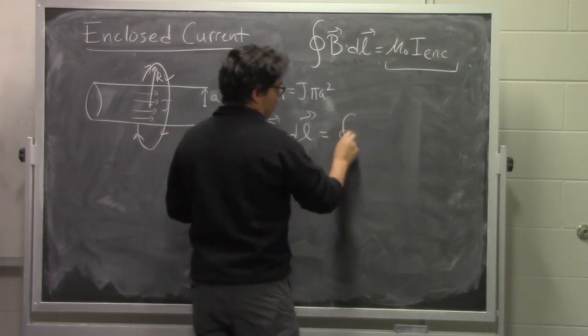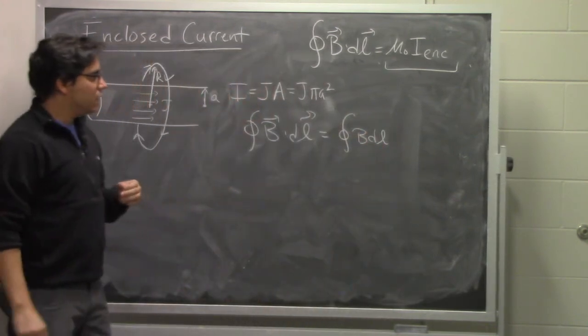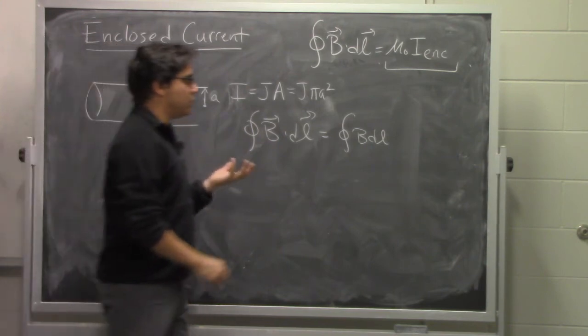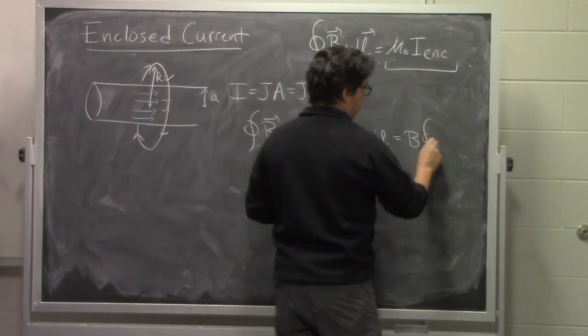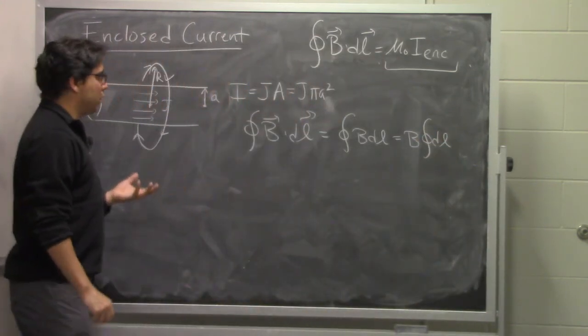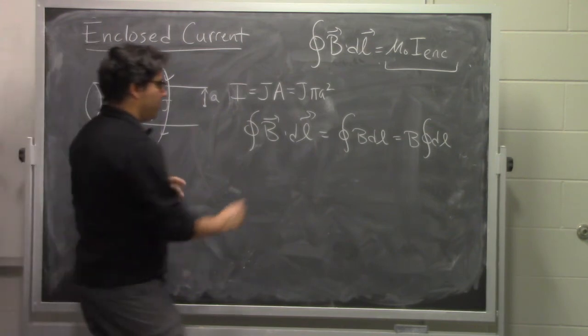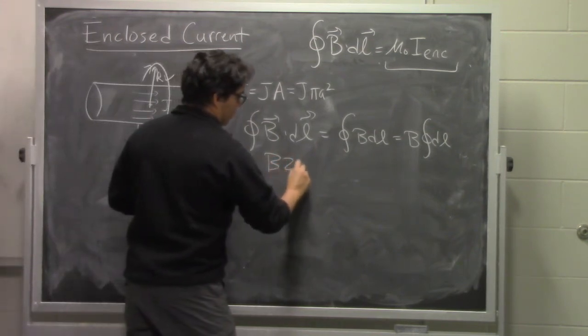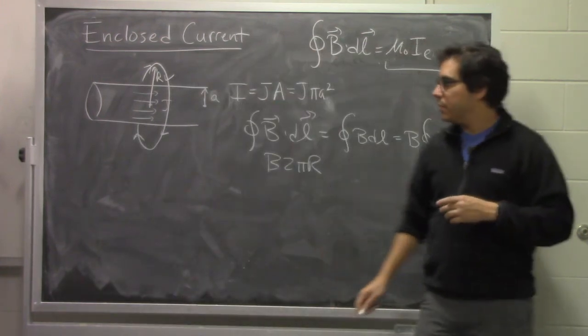The magnetic field that's produced by this wire points circumferentially around the loop. And so the integral that we would get suggests that b dot dl, b and dl point in the same direction. So the dot product is much simpler. The magnetic field is constant at a given choice of the distance. So we end up with the integral of dl, which is just the perimeter of the loop we've chosen. In this case, it's a circular loop. So the magnetic field times 2 pi r is what we get in this case.